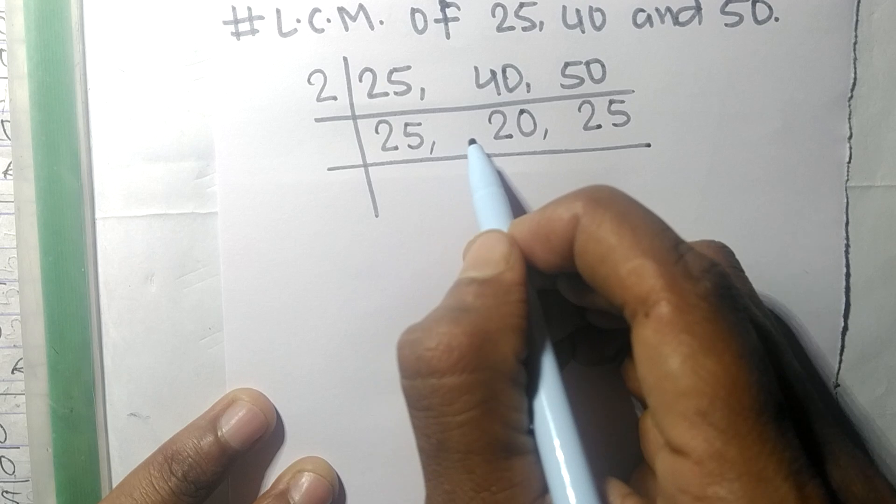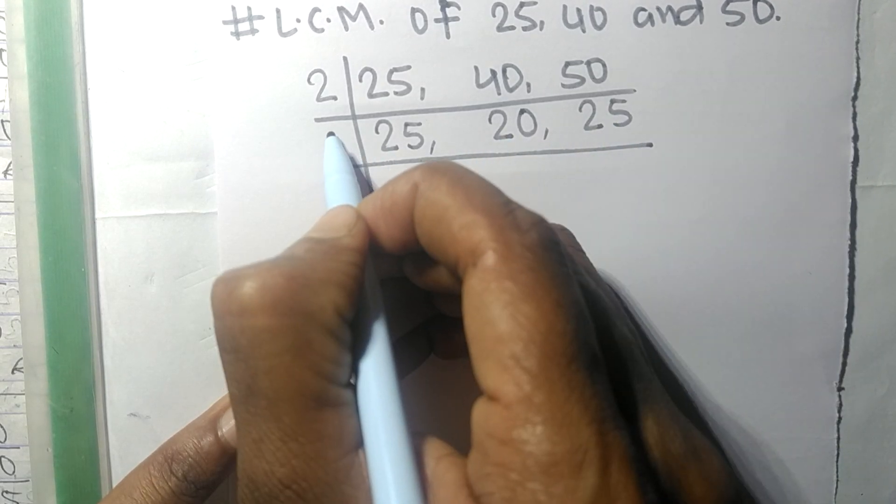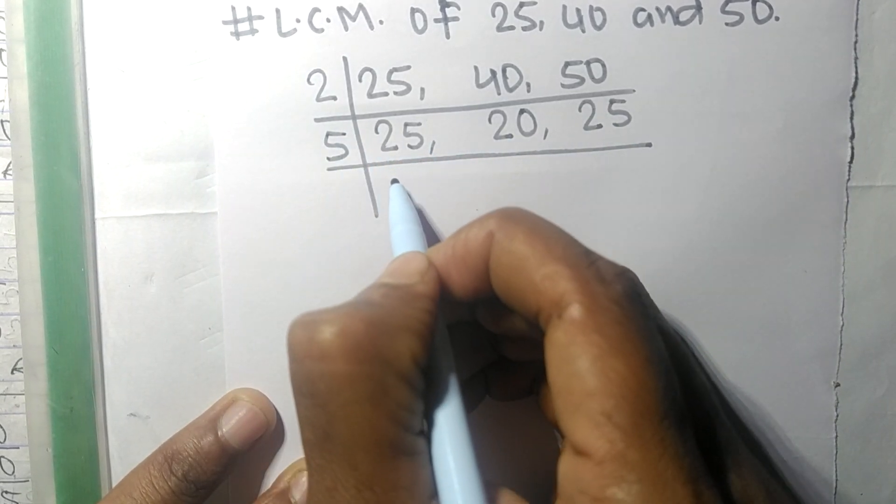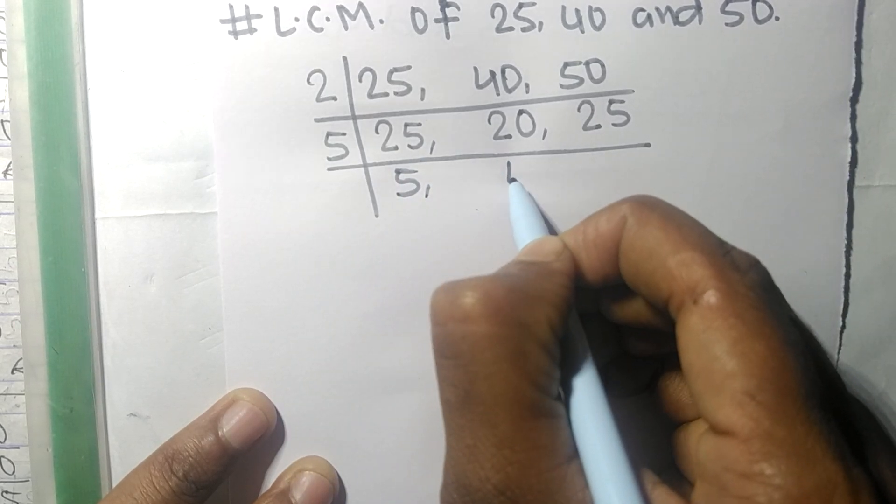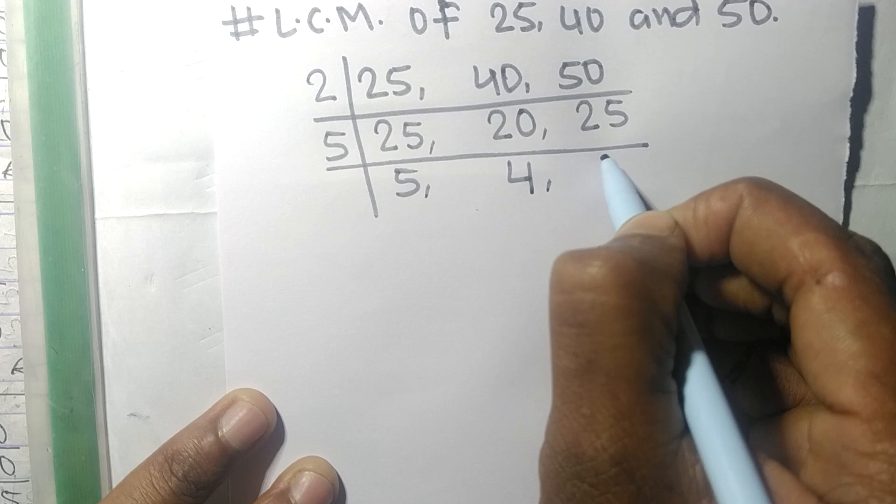Now these all numbers are exactly divisible by 5. So 5 times 5 means 25, 5 times 4 means 20, 5 times 5 means 25.